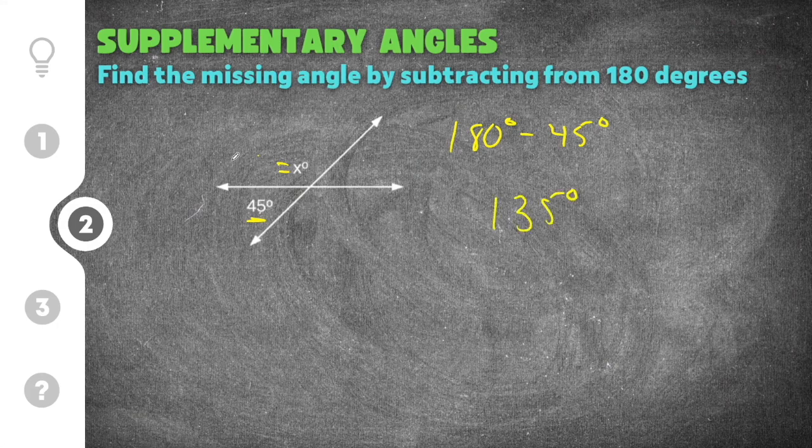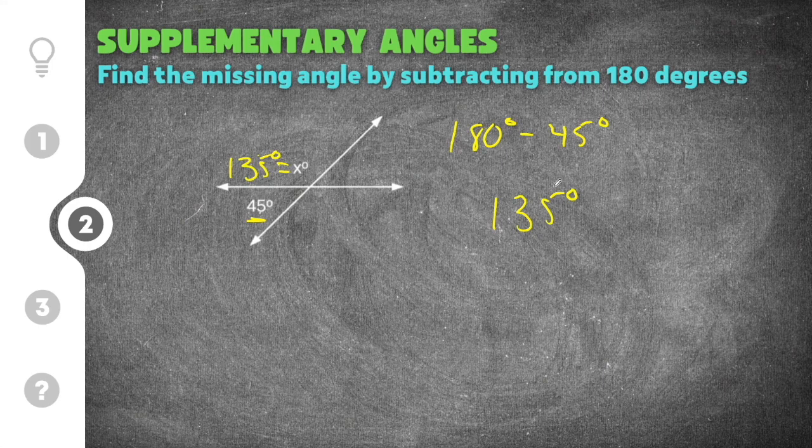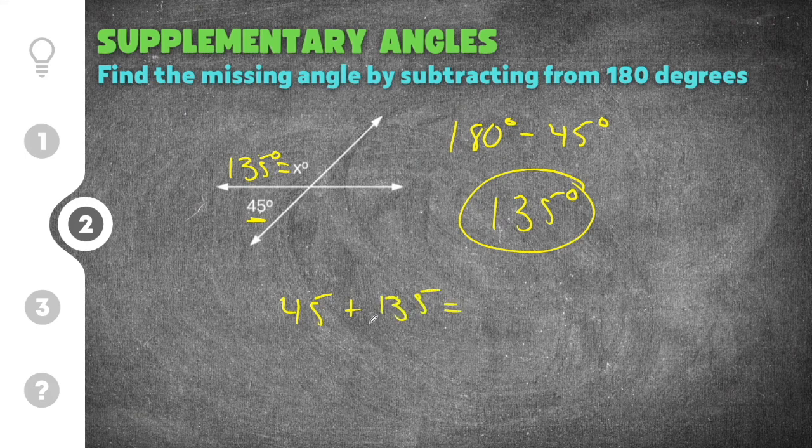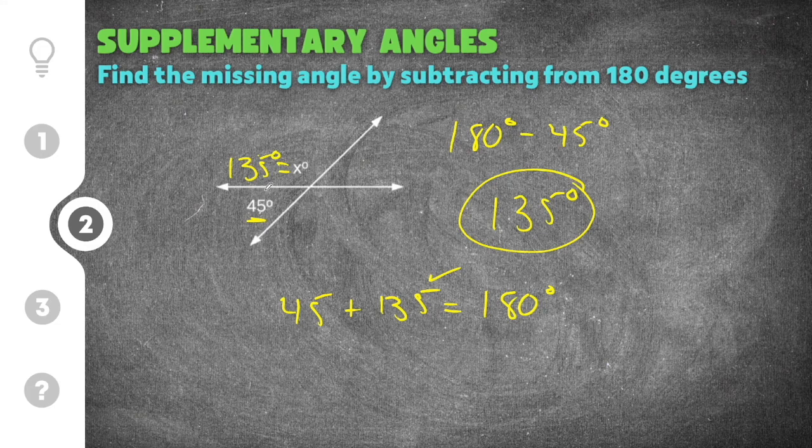So that means this x here has to be 135 degrees. And again if you want to double check you can say we're going to do 45 plus 135 those two added together will equal 180. So we know 135 is the correct answer.